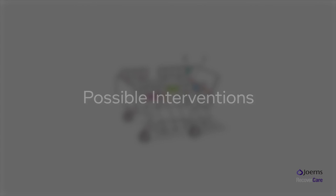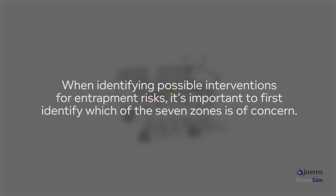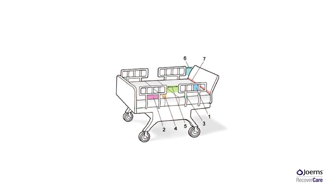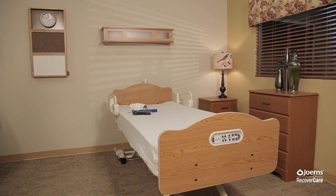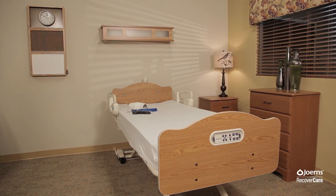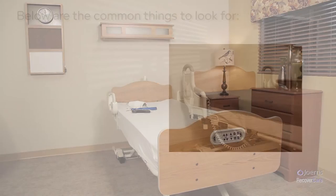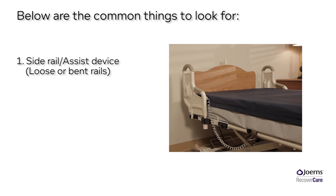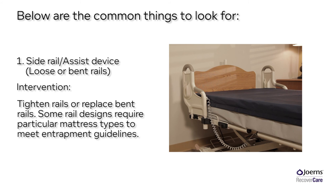When identifying possible interventions for entrapment risks, it's important to first identify which of the seven zones is of concern. Once the zone is determined, pinpoint the root cause of the entrapment risk — keep in mind there could be a combination of factors. Intervention 1: Side rail and assist device — loose or bent rails. Intervention: tighten rails or replace bent rails.